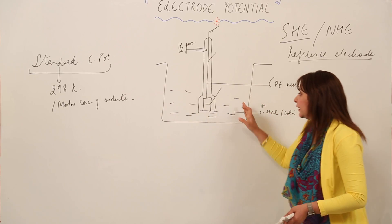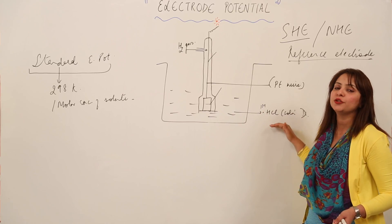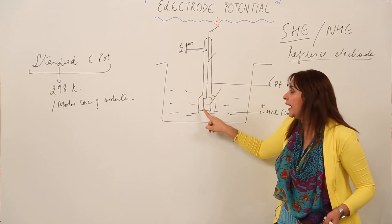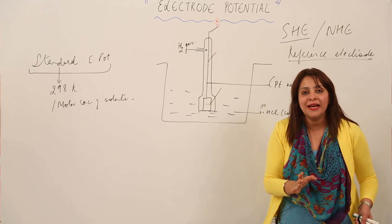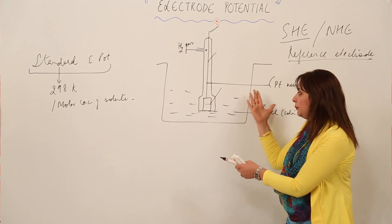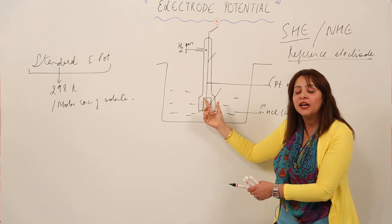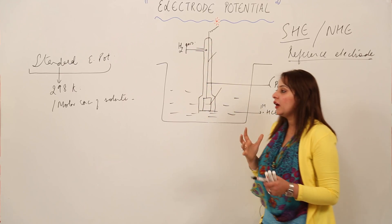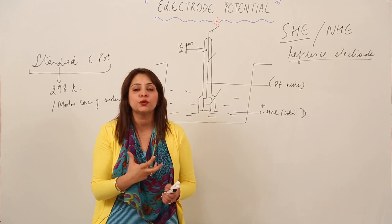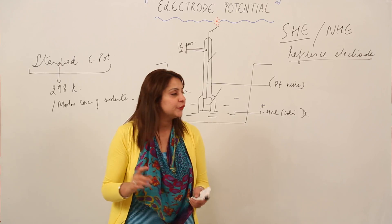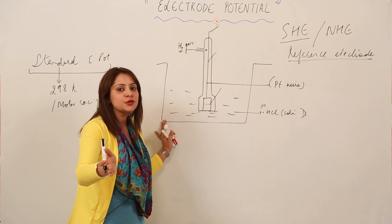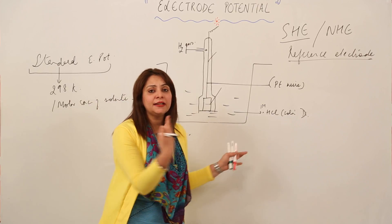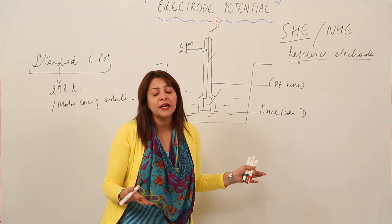The SHE consists of a beaker containing a 1 molar HCl solution, a platinum wire to which a platinum foil is attached, and a tube through which hydrogen gas is bubbled. It can also use a copper wire. So the SHE arrangement has: a beaker, 1 molar HCl solution, a platinum wire with platinum foil attached, and hydrogen gas bubbled through it.